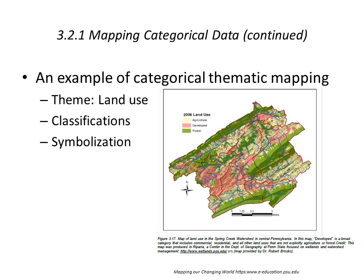In this example, we see categories of land use and land use classification symbolized on a map. The land use classes of either agriculture, developed, or forest are symbolized using colors, and then secondly, the symbolization of physical features on the map as well.